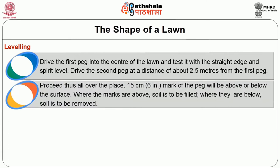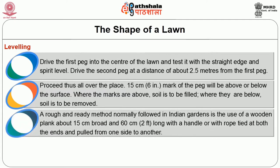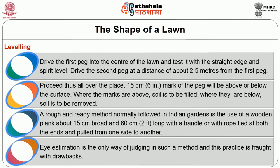The 15 cm mark of the peg will be above or below the surface. Where the marks are above, soil is to be filled. Where they are below, soil is to be removed. A rough and ready method normally followed in Indian gardens is use of a wooden plank, about 15 cm broad and 60 cm long with a handle or with a rope tied at both ends and pulled from one side to another. High estimation is the only way of judging in such a method and this practice is fraught with drawbacks.